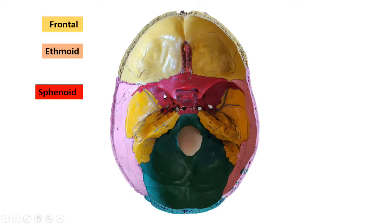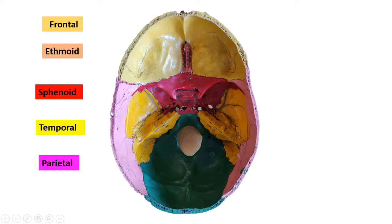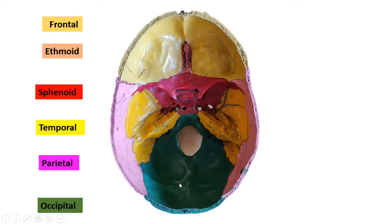You have the lesser wing of the sphenoid and the greater wing. Next, the yellow color bone you are seeing is the temporal bone — this is the squamous part of the temporal bone and this is the petrous part of the temporal bone. Next, the light pink color area you are seeing is the parietal bone, on both sides. And the last bone we have is the occipital bone — it is the most posterior boundary of the cranial cavity.